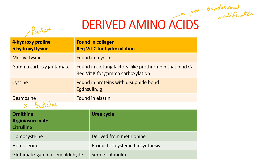Those which form proteins include 4-hydroxyproline and 5-hydroxylysine — proline is an imino acid with a pyrrolidine ring and lysine is a basic amino acid. For hydroxylation of these amino acids, vitamin C is required, and the hydroxylated forms are found in collagen. Methyl lysine is found in myosin in muscle. Gamma-carboxyglutamate is a very important component of clotting factors, and for gamma-carboxylation, vitamin K is required.